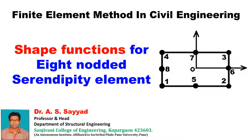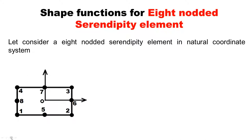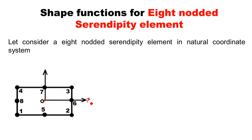Our today's topic is shape functions for 8-noded serendipity element. If you consider one 8-noded serendipity element in natural coordinate system, the origin is assumed at the center of the element, the horizontal coordinate represents the xi coordinate, and the vertical coordinate represents the eta coordinate.